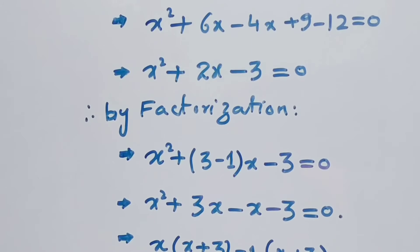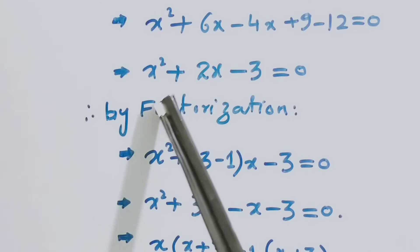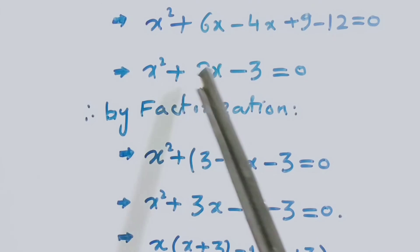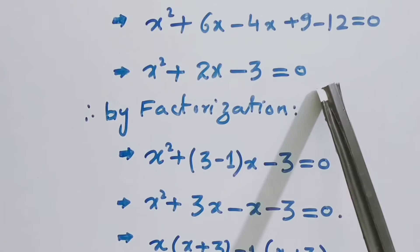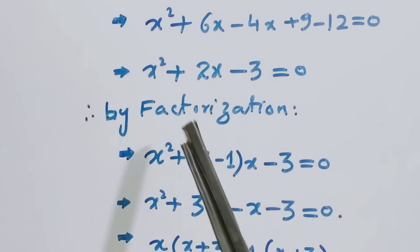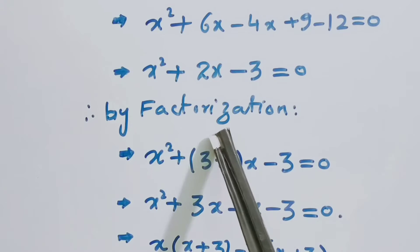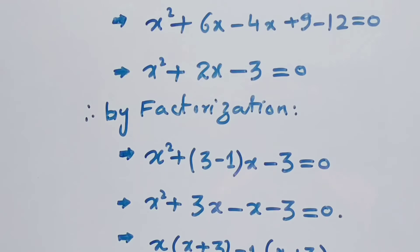After simplification, we have the quadratic equation x² + 2x − 3 = 0. We can solve this by factorization or by the quadratic formula — whichever method is easier. Here we will use the factorization method.